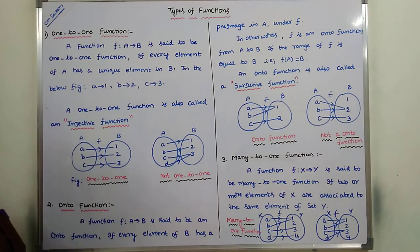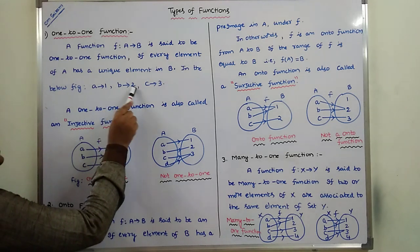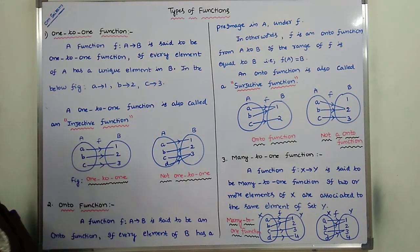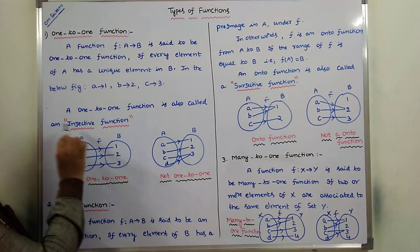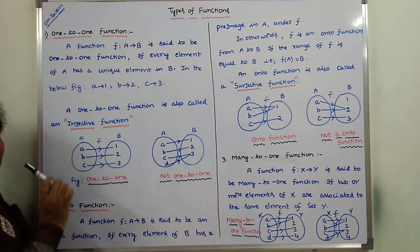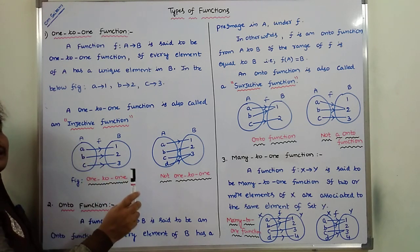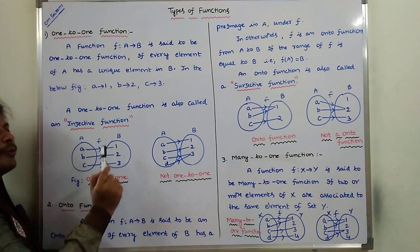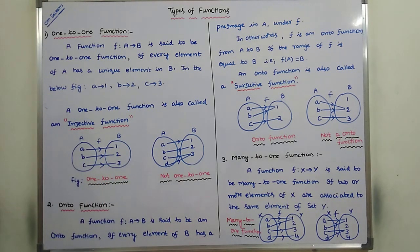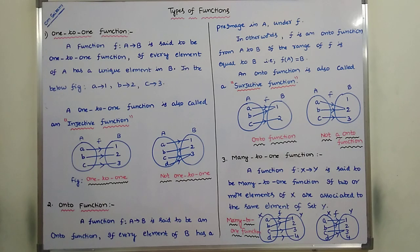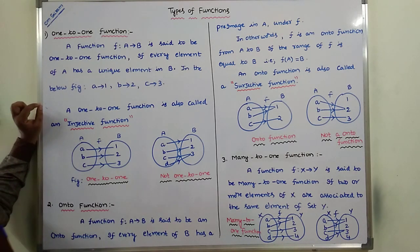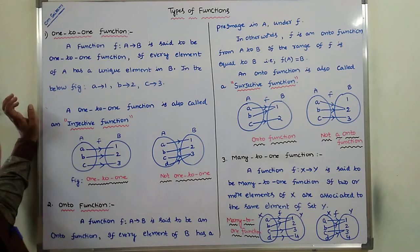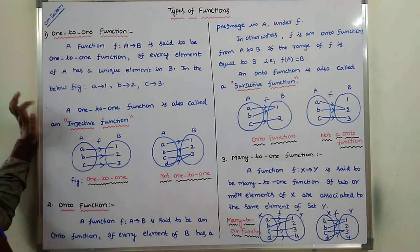A is associated with 1, b is associated with 2, c is associated with 3. For every element of set A, there is a unique element in set B. Hence we can say that this is a one-to-one function. One-to-one function is also called an injective function.